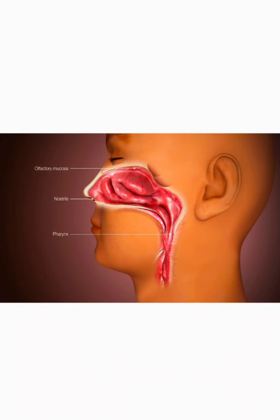The next structure is the pharynx. Pharynx is classified into nasopharynx and oropharynx. The bony plate called the palate separates the nasopharynx and oropharynx. Pharynx is generally a muscular structure lined with mucous membrane. It also helps in preventing dust particles from getting into the respiratory tract and adds water vapor into the air before it enters into the lungs.